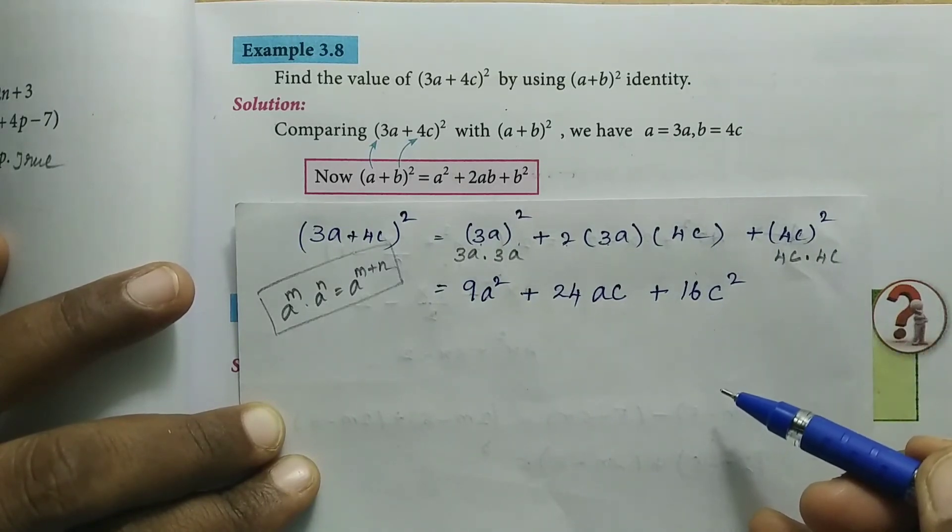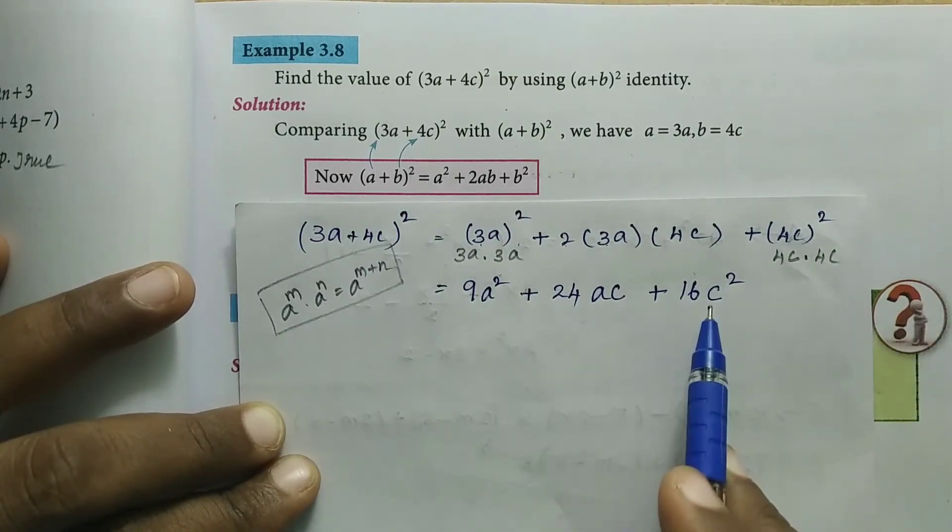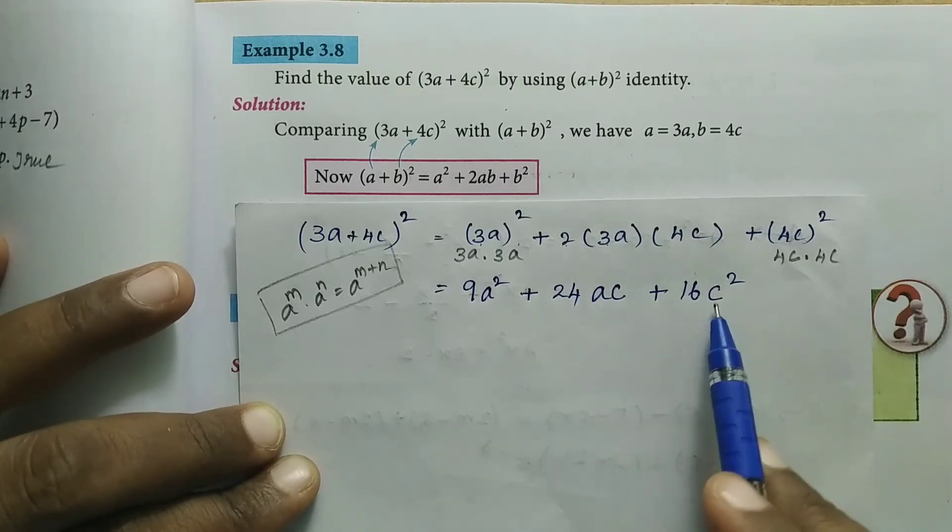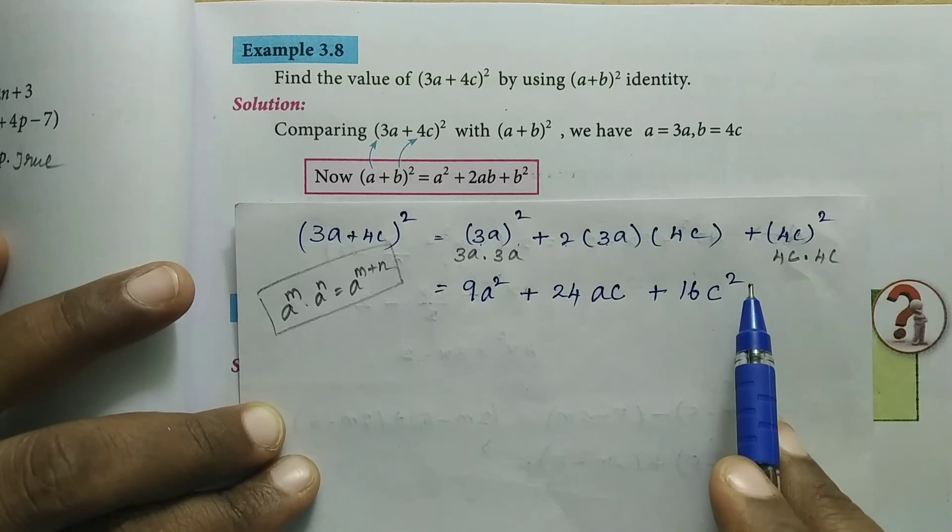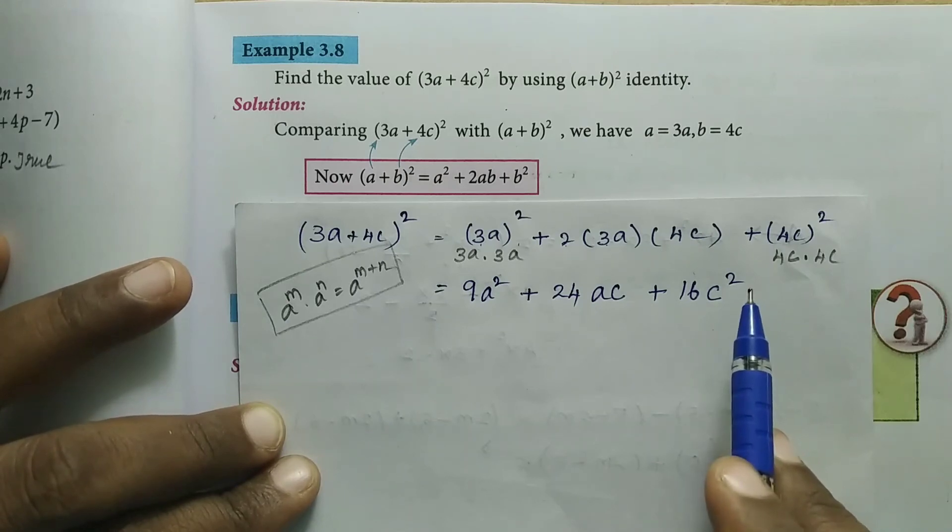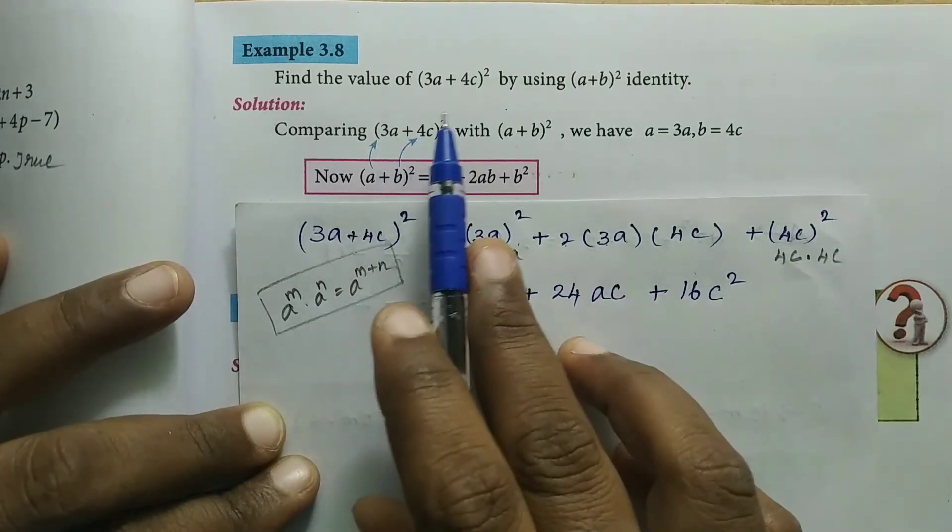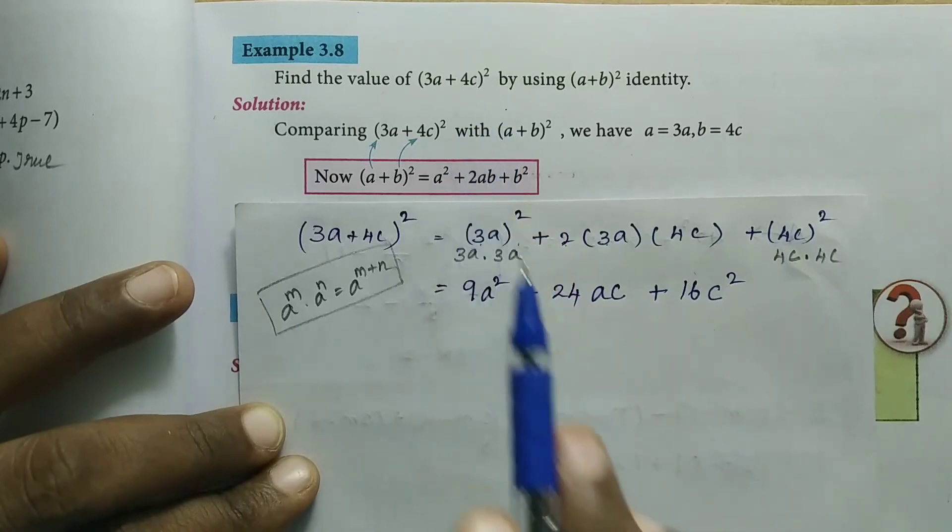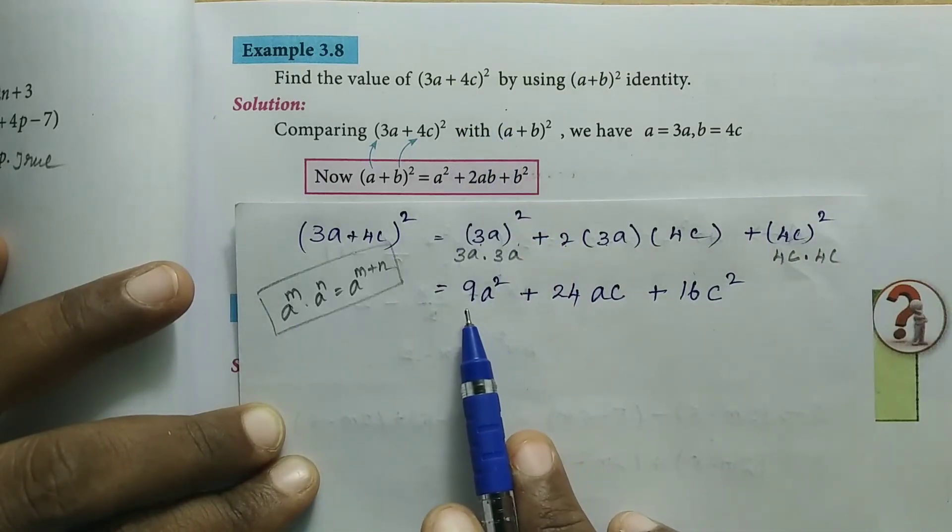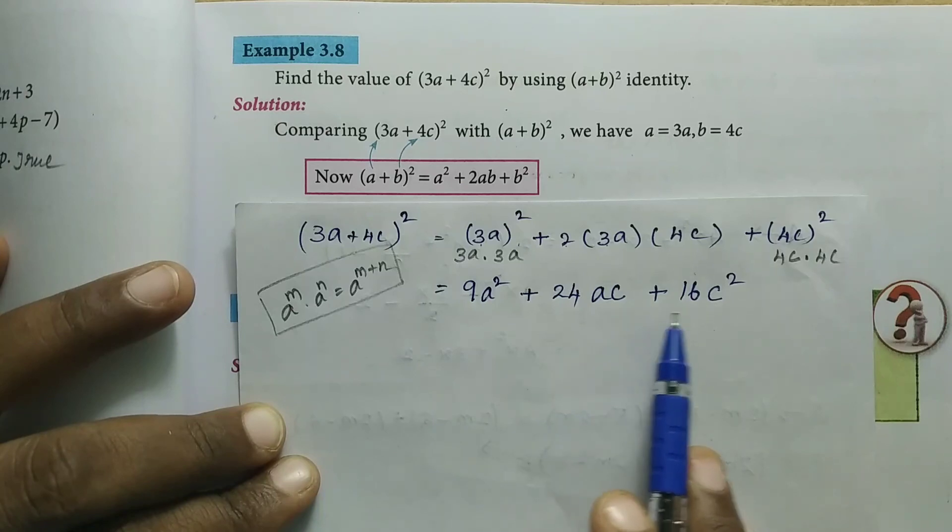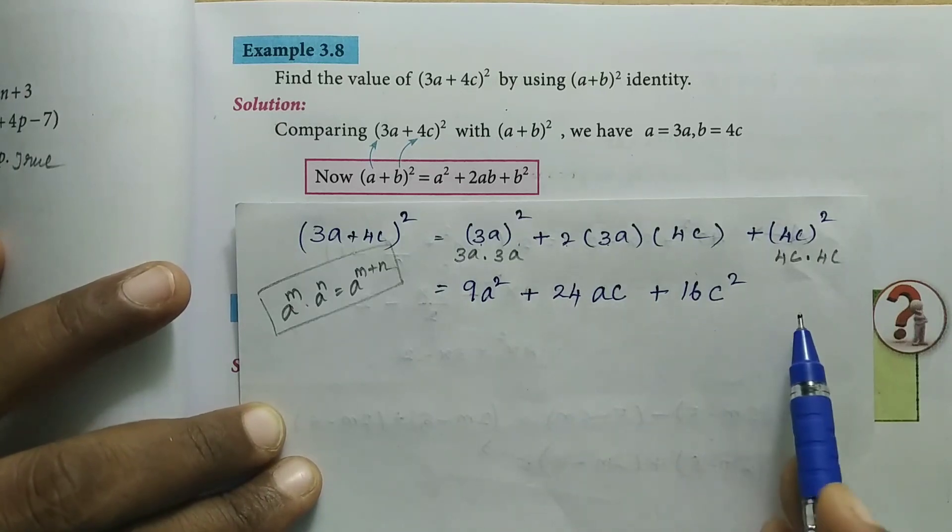This reduces to three terms with variables: a², ac, and c². These are unlike terms, so we cannot add or subtract them further. Therefore, the final answer for (3a + 4c)² is 9a² + 24ac + 16c².